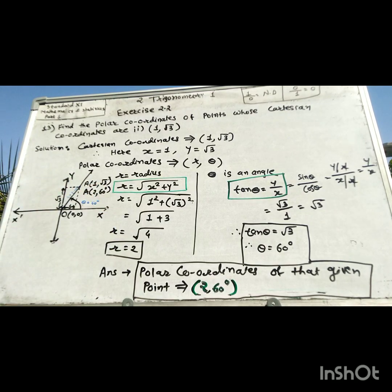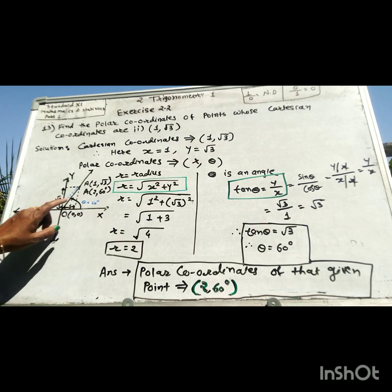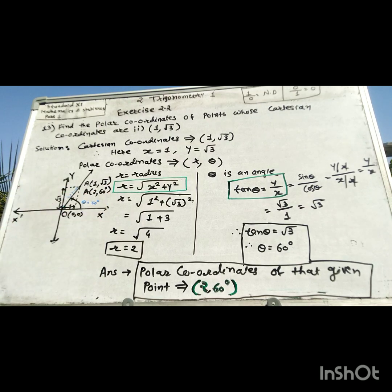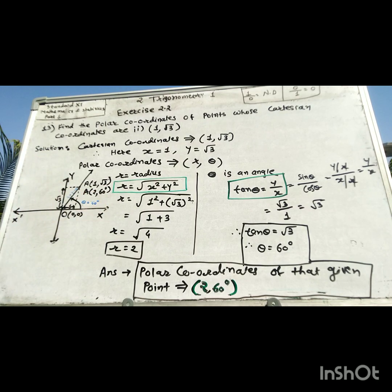So the polar coordinates of point A are 2 and 60 degrees. We can see the Cartesian coordinates and the polar coordinates, and we can locate the point in the coordinate system.